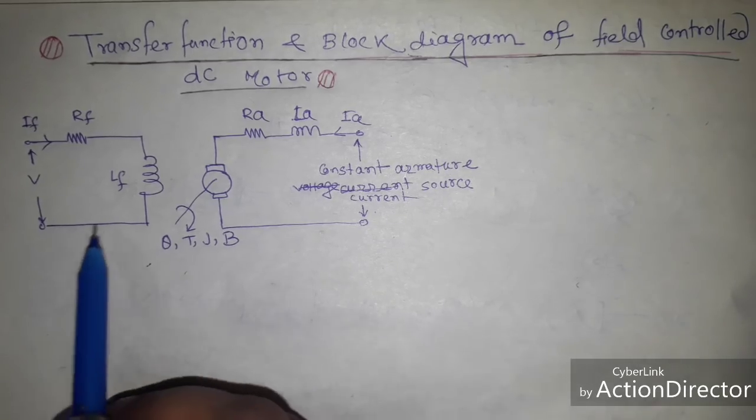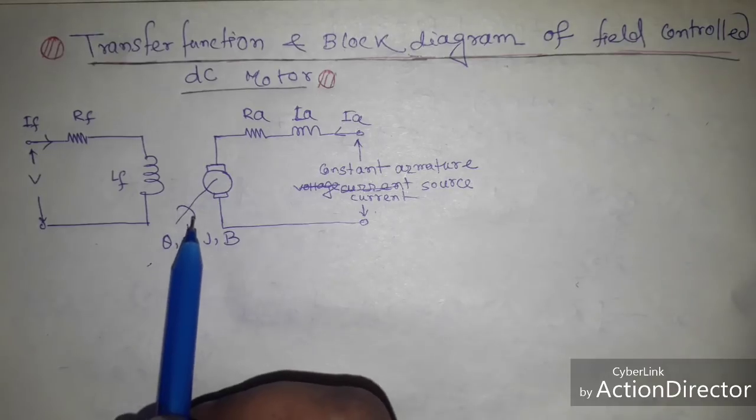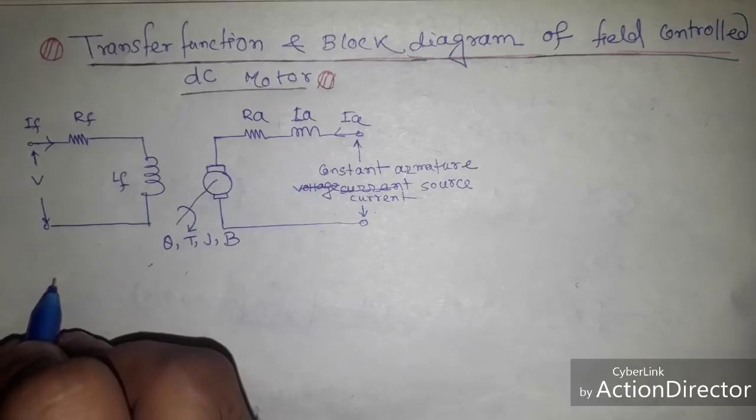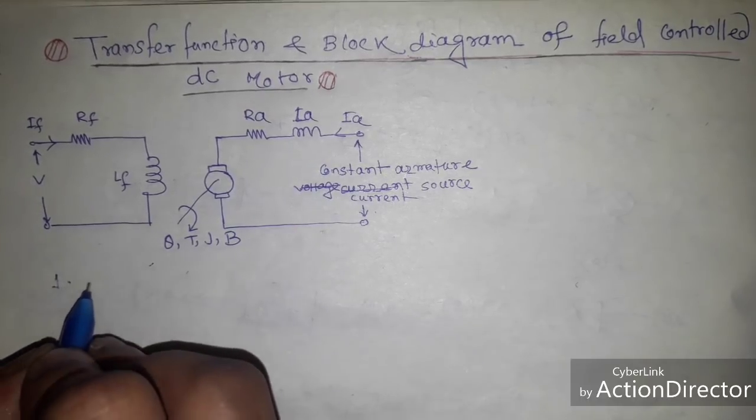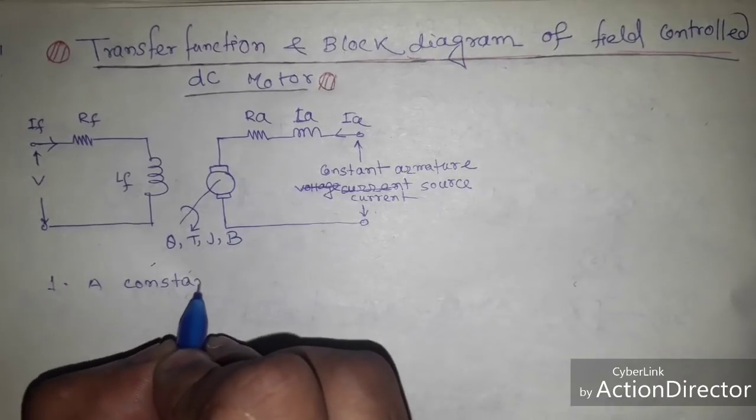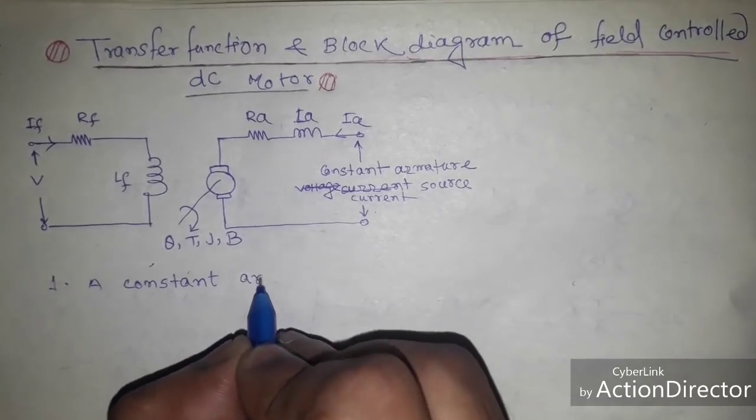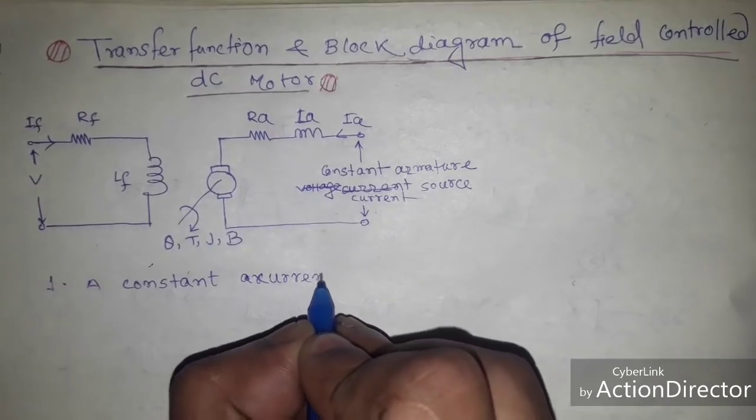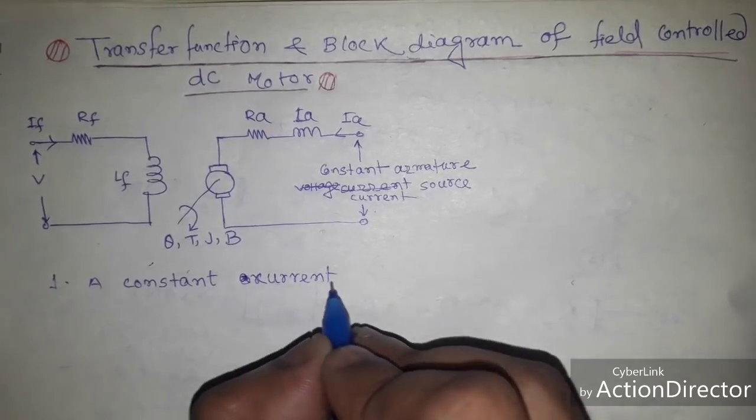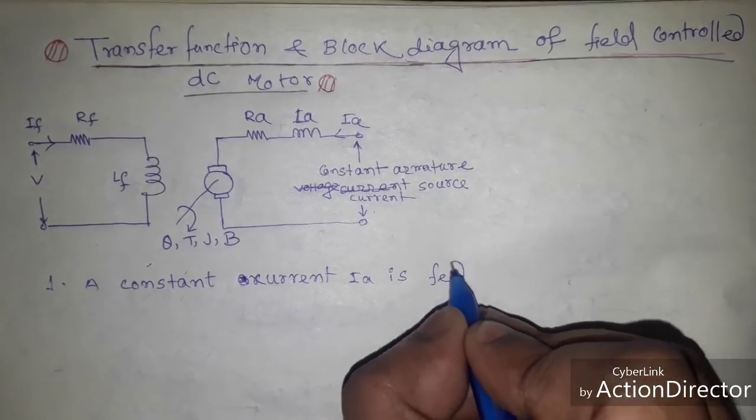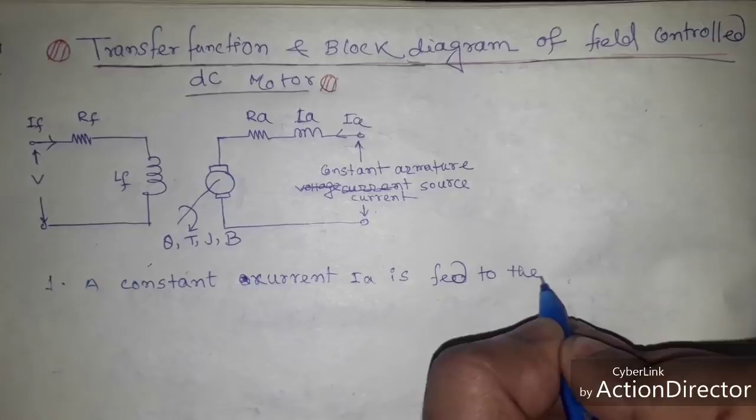So you can see this is the basic circuit diagram of field control DC motor. Here armature current is constant, so in my first step a constant current Ia is fed to the armature.